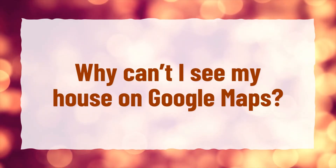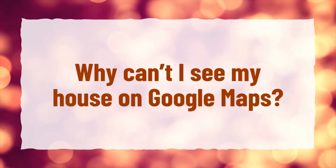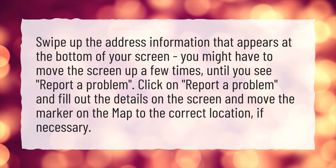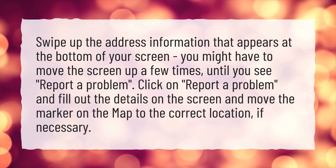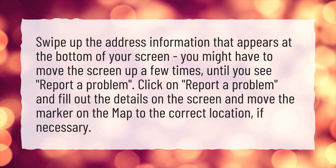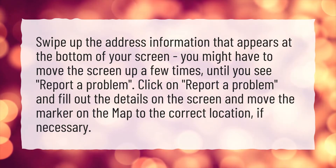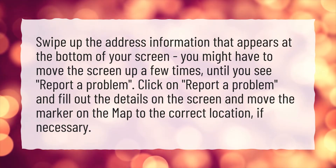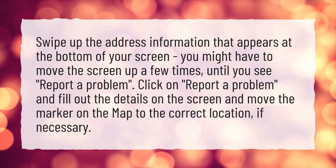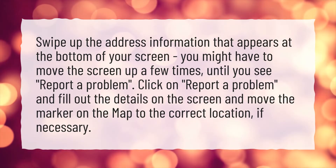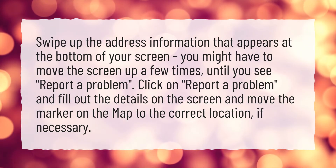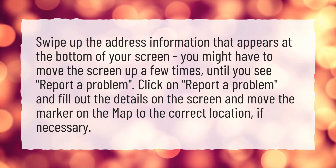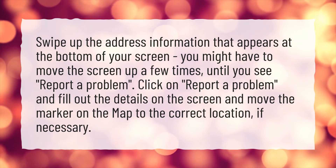Why can't I see my house on Google Maps? Swipe up the address information that appears at the bottom of your screen. You might have to move the screen up a few times until you see Report a Problem. Click on Report a Problem and fill out the details on the screen, and move the marker on the map to the correct location if necessary.